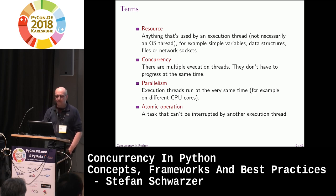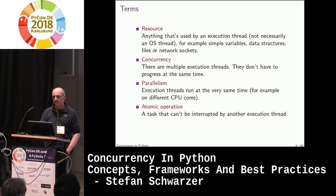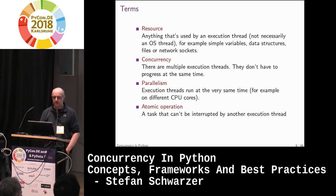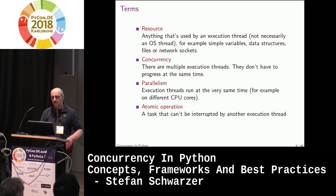Some terms. A resource is a very generic term — anything that's used by an execution thread. Execution threads don't necessarily mean operating system threads, but they could be. Resources can be simple variables, data structures, files, network sockets, or even a screen. If you output data to a terminal or GUI window and write from different threads, you don't want to mix the output up, so you need to serialize there as well.